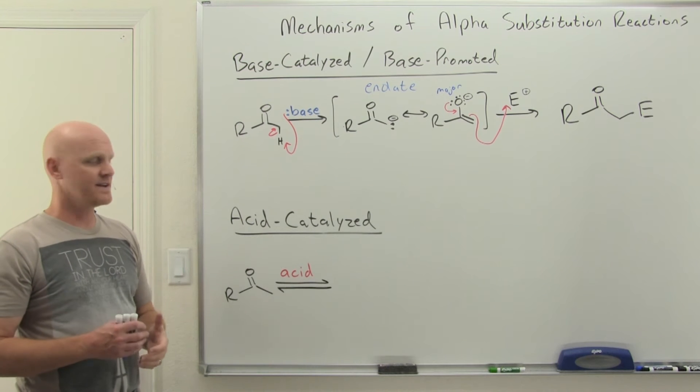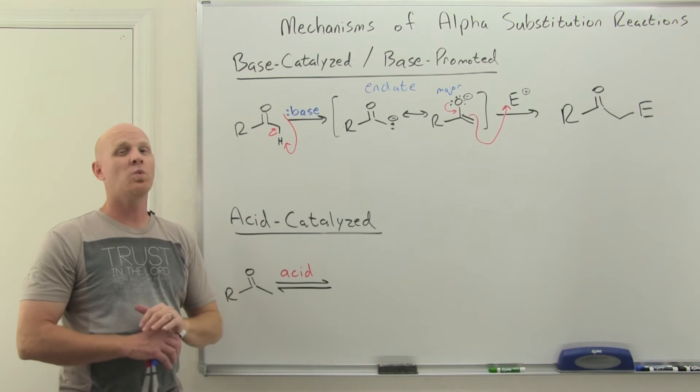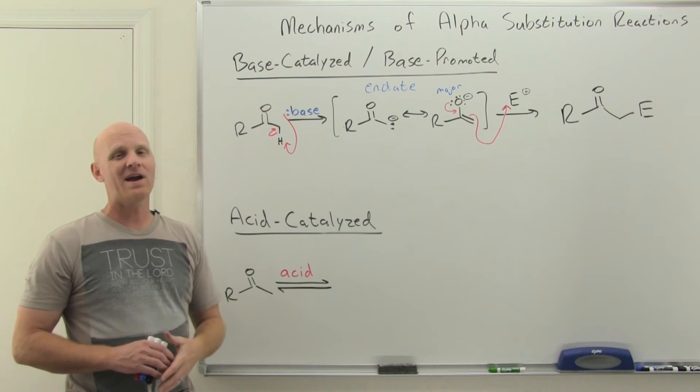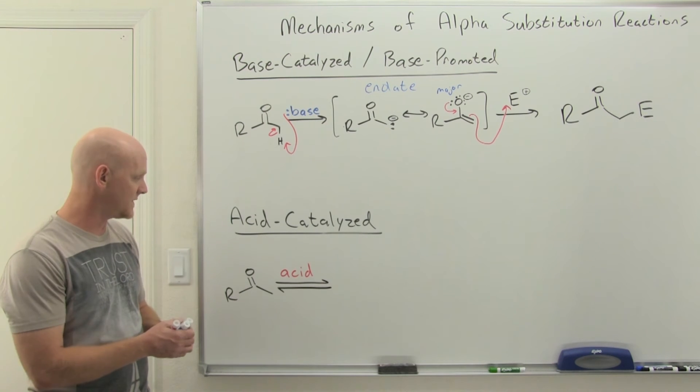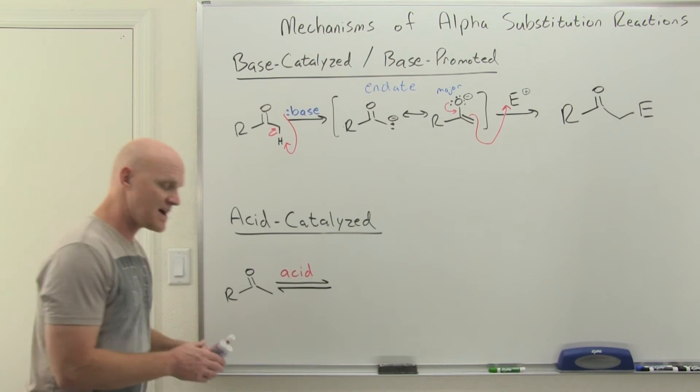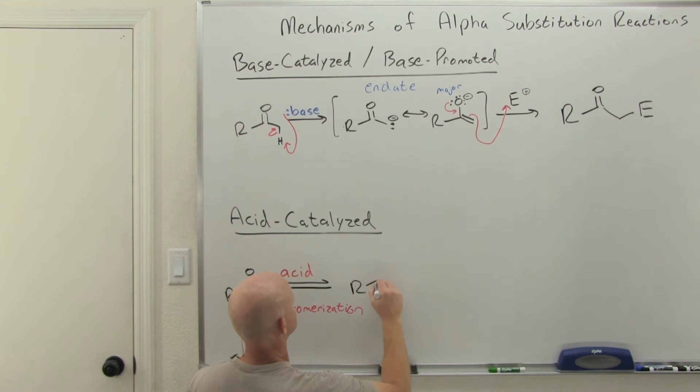Acid-catalyzed is the next mechanism. Acid-catalyzed mechanisms, if you haven't figured this out, are way less fun to do the arrow pushing for than the base-catalyzed ones, and that's going to hold true in this chapter as well. In this case, the first step, and I told you I was going to take this for granted, but this first step is simply going to be tautomerization. This lovely ketone in this case is going to tautomerize to the corresponding enol.